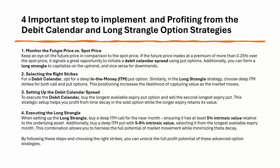The first step is to observe the future price and the spot price. Whatever the spot Nifty is trading at and whatever the future Nifty is trading at — these two are very important to observe. If the future price is at a premium more than 0.25 percent over the spot price, then the debit calendar should be initiated in the put options, and the long strangle can also be utilized to benefit from the uptrend. Whenever the future maintains a premium irrespective of corrections, that trend is not reversed — it is a bullish trend just going through some corrections.